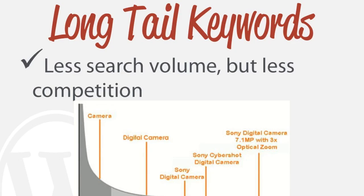Short tail keywords like 'camera' get a lot of searches, but also have a lot of competition. As we go to a longer tail keyword, we get less search volume, but also a lot less competition. Remember, the number one spot on Google gets 33% of traffic — so even for 'Sony digital camera 7.1 megapixel with three times optical zoom,' if we're number one for that long tail keyword, we still get a lot of traffic.